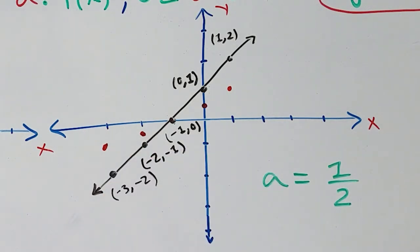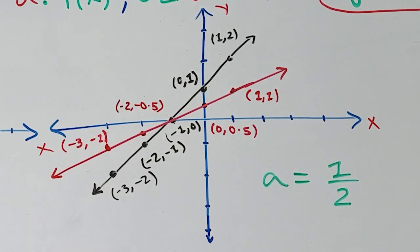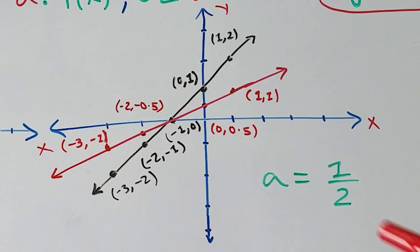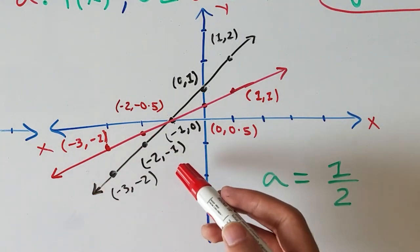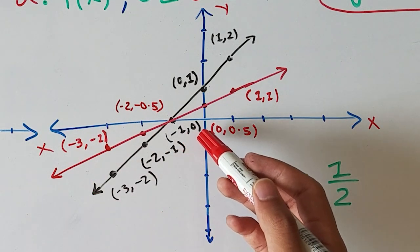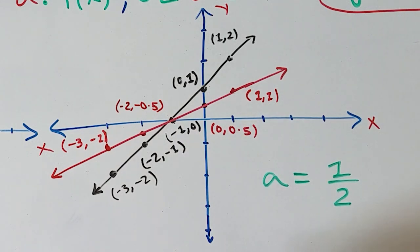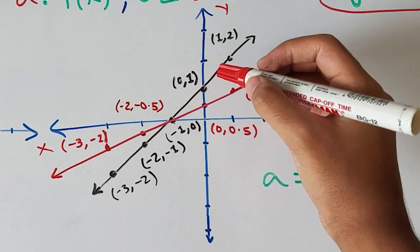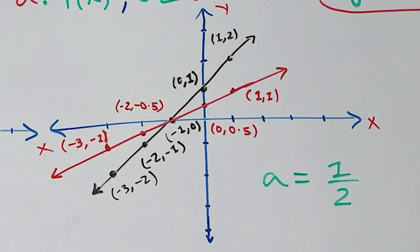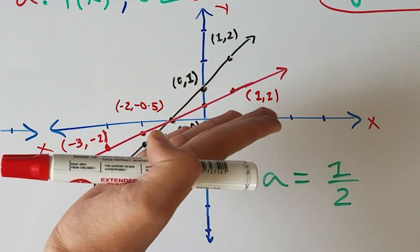Connecting the dots gives the red transformed function, which has undergone a vertical shrink by a factor of 1/2. The similarity is that the x-intercept remains the same at (−1, 0). The differences are that the y-intercept changed from (0, 1) to (0, 0.5), and the slope decreased from 1 to 1/2 because of the shrink factor.